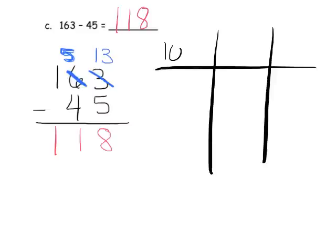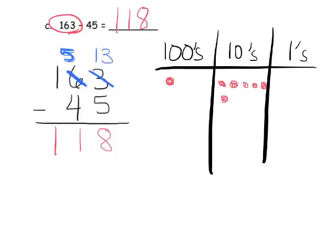I'm going to label my place value chart: hundreds, tens, and ones. Students are going to model it with dots rather than actual place value chips. We're going to model 163: one hundred, then 1, 2, 3, 4, 5, 6 tens, and then 1, 2, 3 ones — there's our model for 163. Now we're going to subtract 45, beginning by subtracting the five ones, but we only have three.